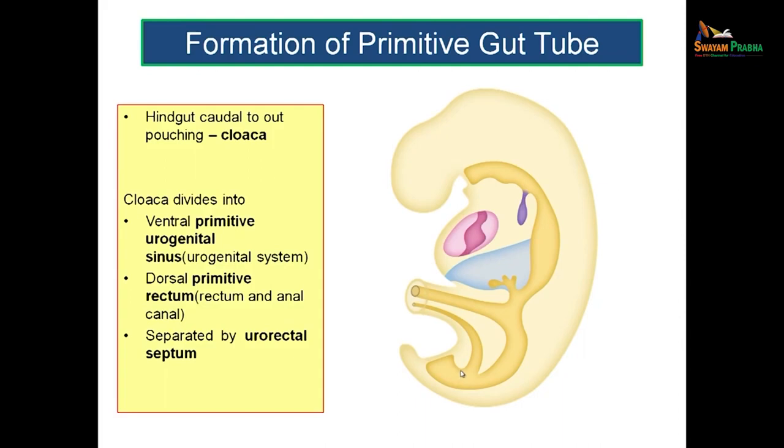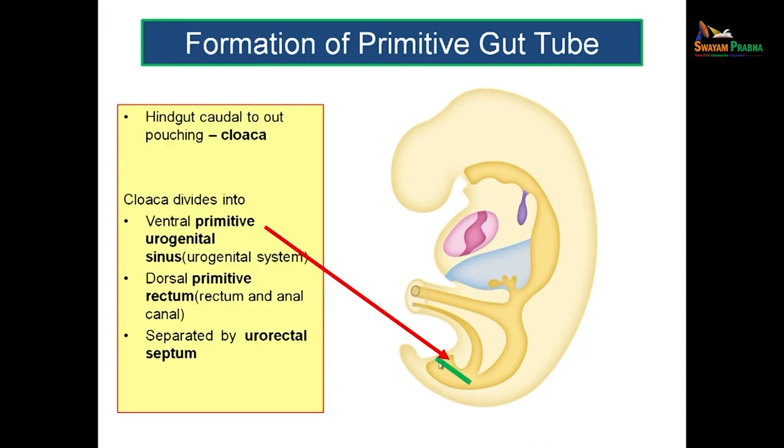Dorsally it is known as the primitive rectum, from which the rectum and anal canal are formed. The cloaca was first a single pouch which got separated by the formation of a urorectal septum. This urorectal septum comes down into the cloaca and divides it into a ventral or anterior primitive urogenital sinus — giving rise to the urogenital system — and a dorsal portion known as the primitive rectum, giving rise to the rectum and anal canal.